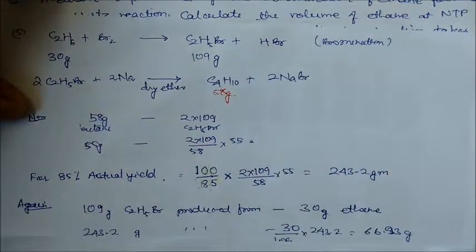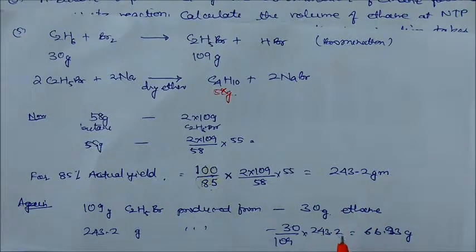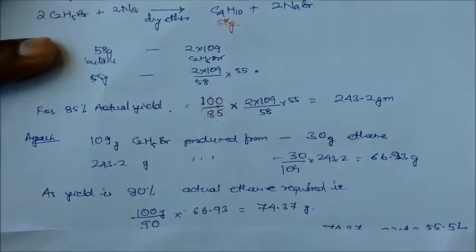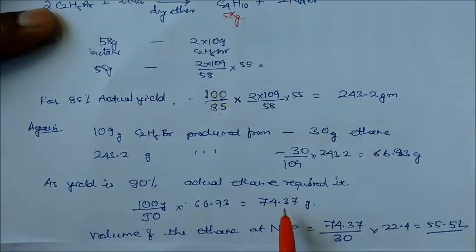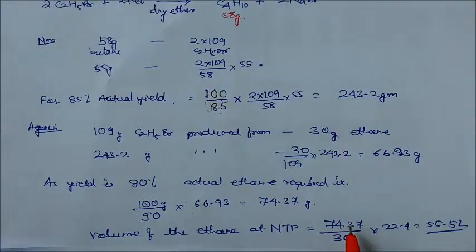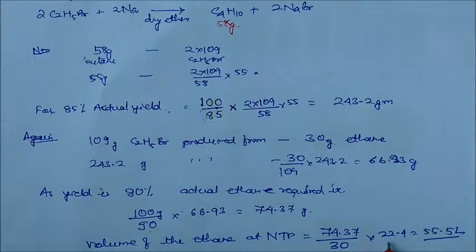From ethane: 109 grams of C₂H₅Br is produced from 30 grams of ethane. The bromination step has only 90% yield, so the actual ethane required is (100/90) × the calculated amount. Finally, dividing the actual ethane mass by its molar mass (30 g/mol) and multiplying by the molar volume gives 55.5 liters of ethane at NTP.